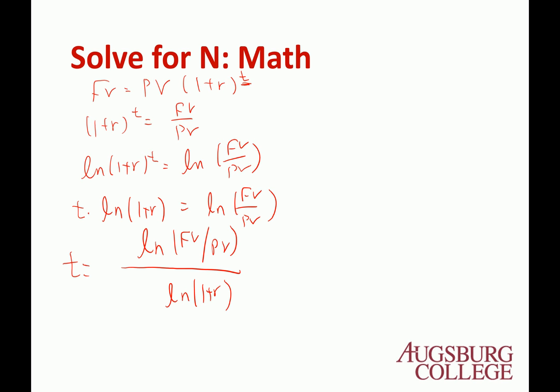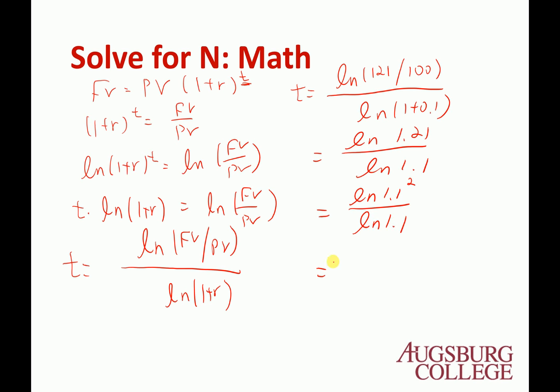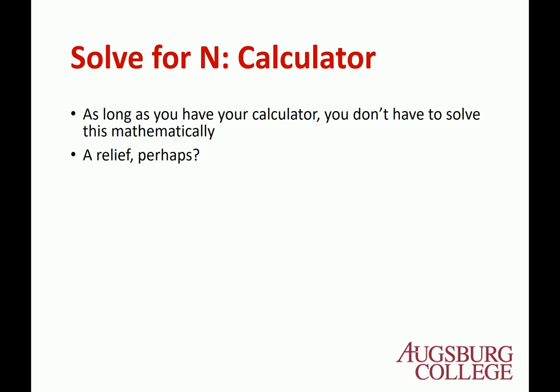Plug the numbers in. T equals log(121/100) divided by log(1 + 0.1), which is log(1.21) divided by log(1.1). This is log(1.1 squared) divided by log(1.1), which equals 2 times log(1.1) divided by log(1.1), so it's canceled and the answer is 2 years. That's the mathematical solution. It looks really complicated, but we don't have to worry about that because we have the calculator.